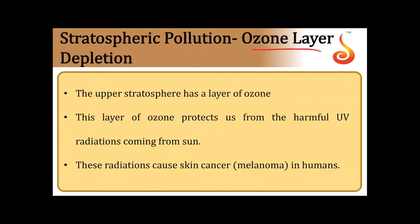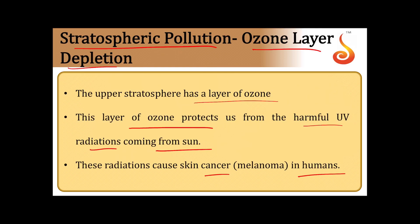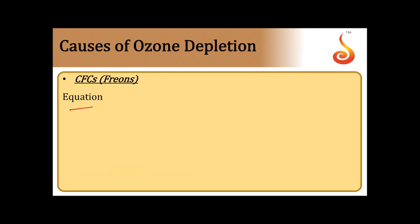Regarding ozone layer depletion — stratospheric pollution: the upper stratosphere has a layer of ozone that protects us from harmful UV radiations from the sun. Without it, radiations cause skin cancer and melanoma. The main cause of ozone depletion is freons — chlorofluorocarbons (CFCs). For example, CF2Cl2 in the presence of sunlight forms CF2Cl• and a chlorine free radical. Similarly, CFCl3 forms CFCl2• and a chlorine free radical.